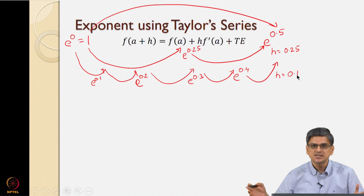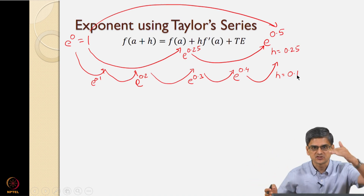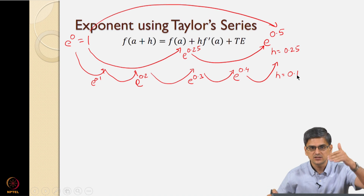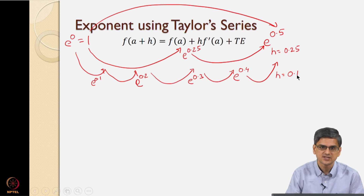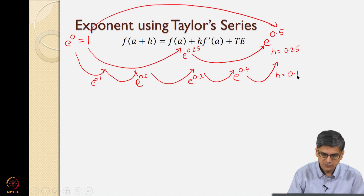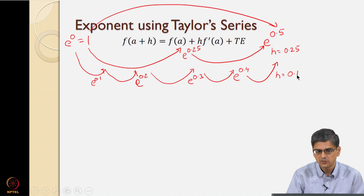So the step size is going to be 0.5 divided by the number of steps — giving step sizes of 0.5, 0.25, and 0.1. These are the three ways in which we are going to use Taylor series approximation in order to calculate e to the power 0.5.